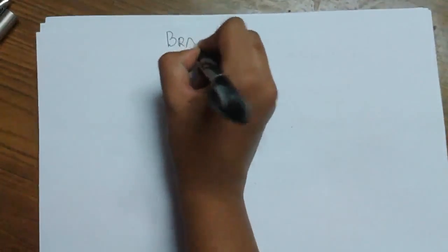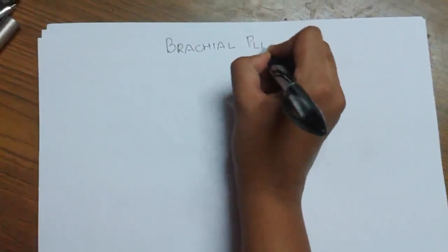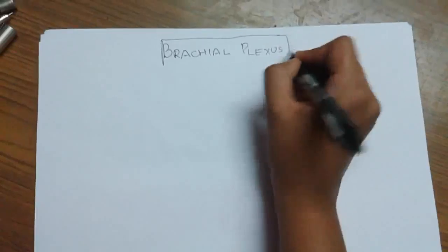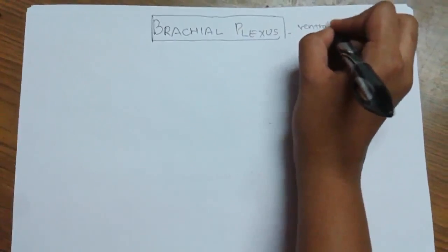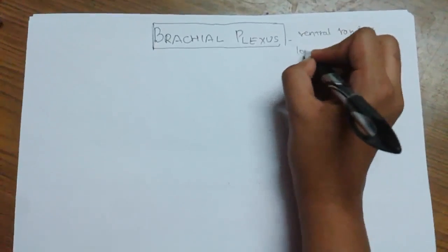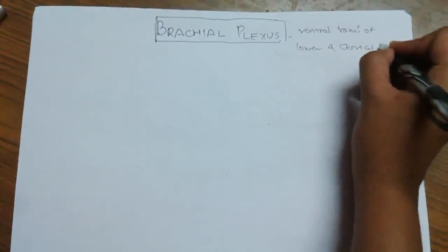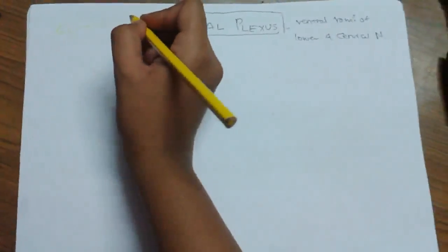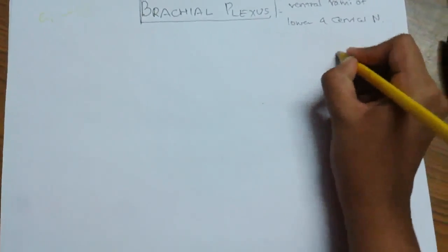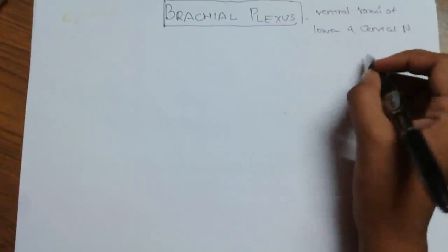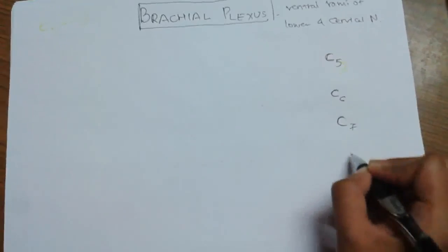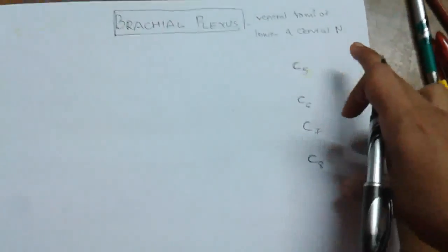Hi friends, now let us learn about the brachial plexus. The brachial plexus is a plexus formed by the nerves of anterior ventral rami, mainly ventral rami of the lower four cervical nerves. The cervical nerve system starts from C1 to C8, so it is formed by the lower four: C5, C6, C7, C8.